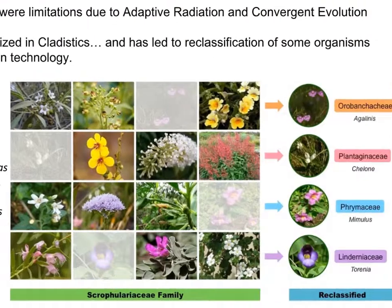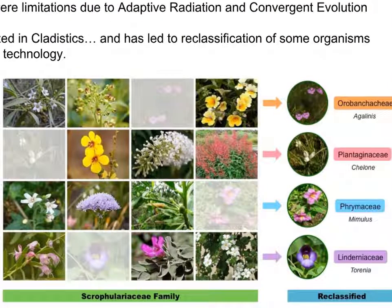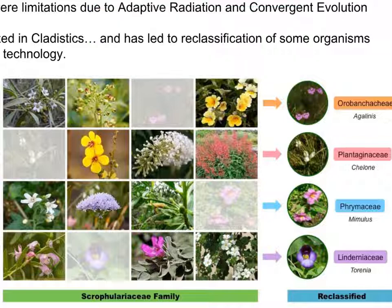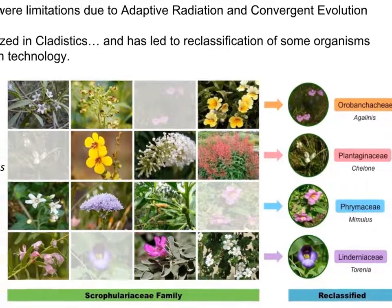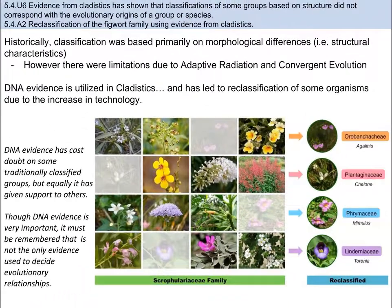A prime example is the reclassification of the figworts. Until recently, figworts were the 8th largest family of flowering plants — angiosperms — containing 275 different genera. This was problematic, as many figwort plants were too dissimilar in structure to function as a meaningful grouping. Taxonomists examined the chloroplast gene in figworts and decided to split the figwort species into 5 different clades. Now less than half of the species remain in the figwort family, which is now the 36th largest among angiosperms. This example truly shows that science is constantly changing — when more evidence presents itself, the responsible thing to do is use it and reclassify.